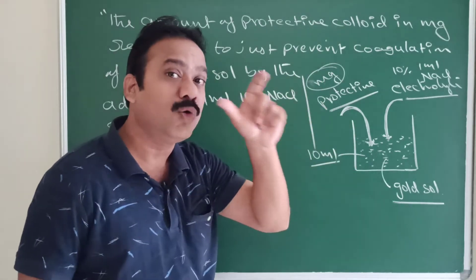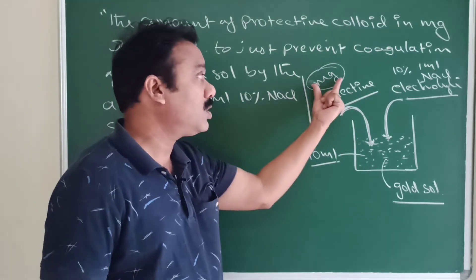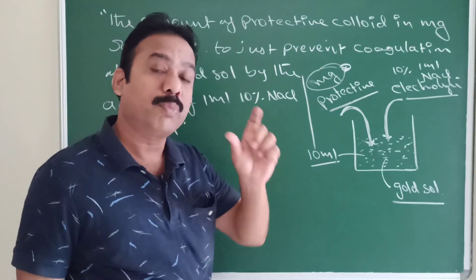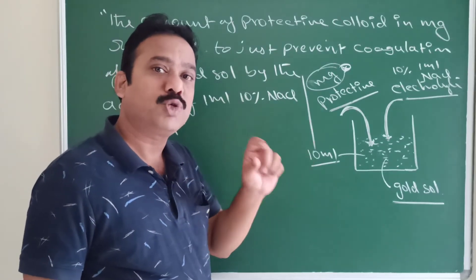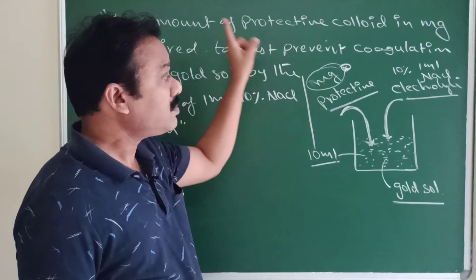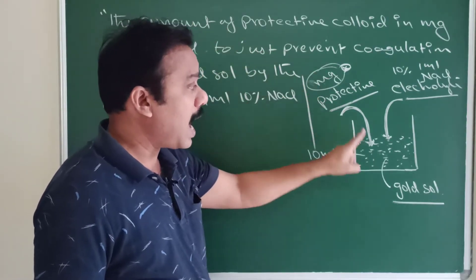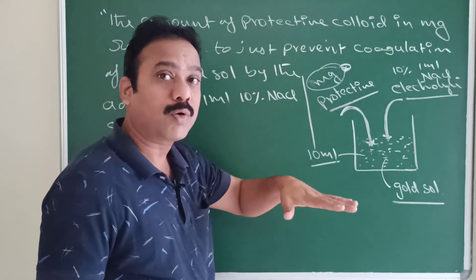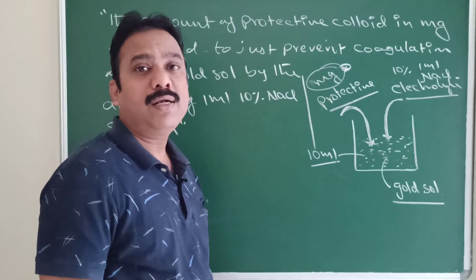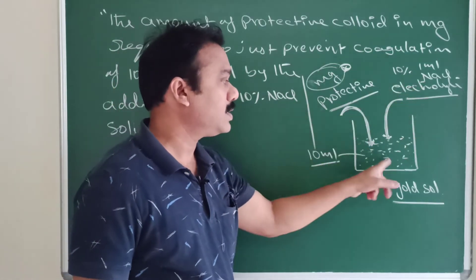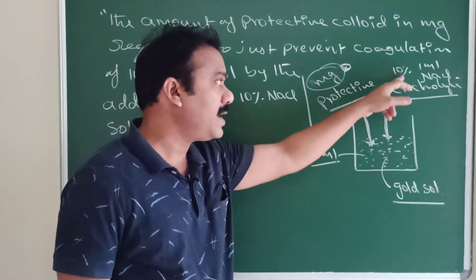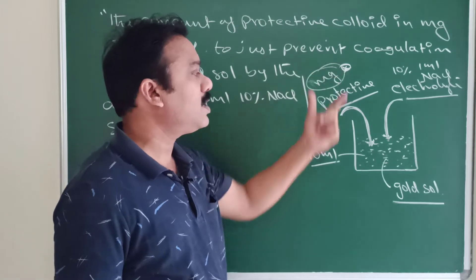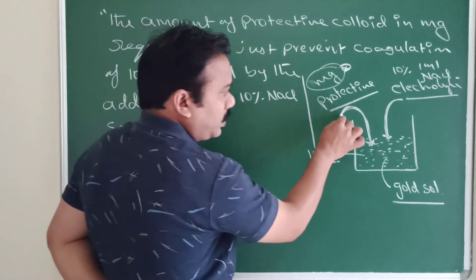Mind it, this is important — it is milligrams of protective colloid. This point is important for exam problems. The amount of protective colloid in milligrams added to 10 ml of gold sol to just prevent coagulation by adding 1 ml of 10% NaCl solution — that amount is called the gold number.